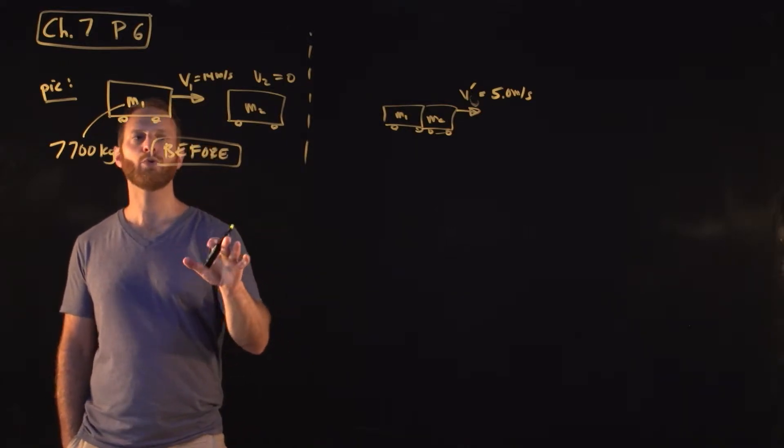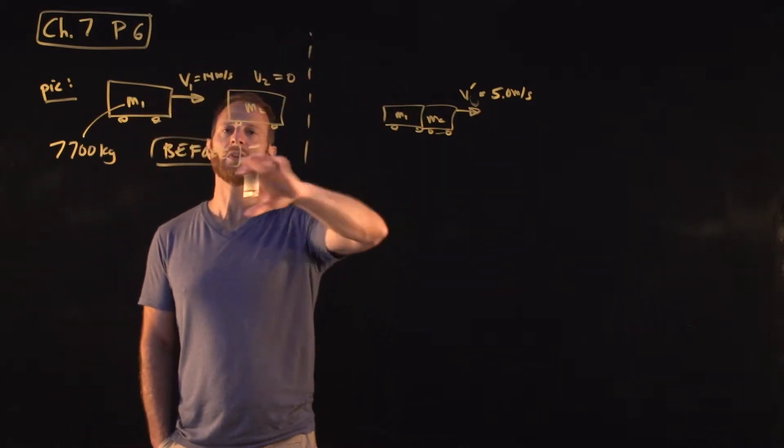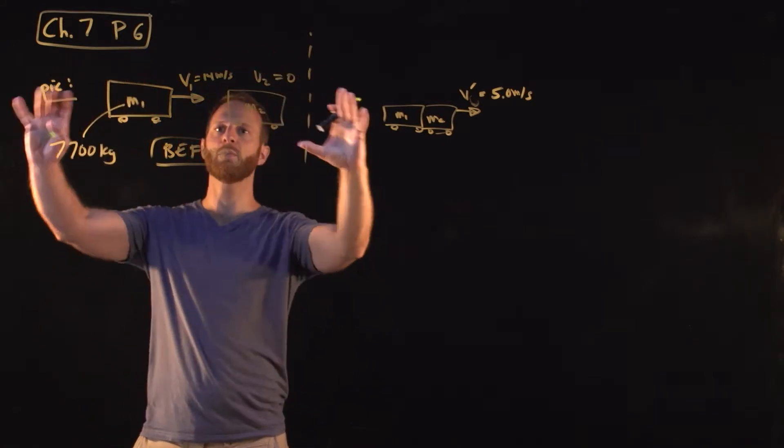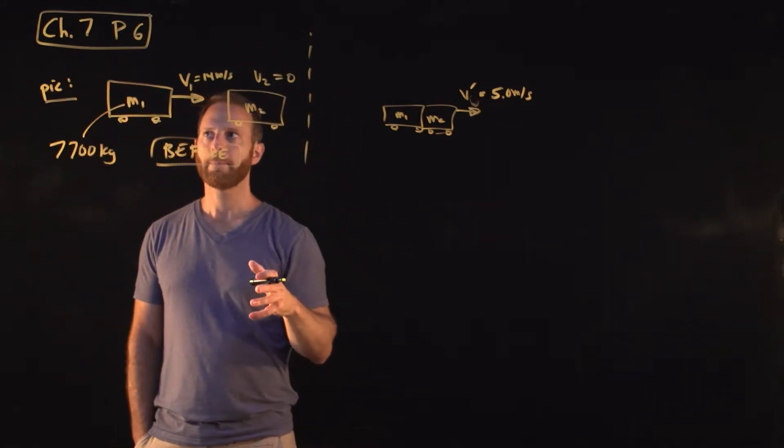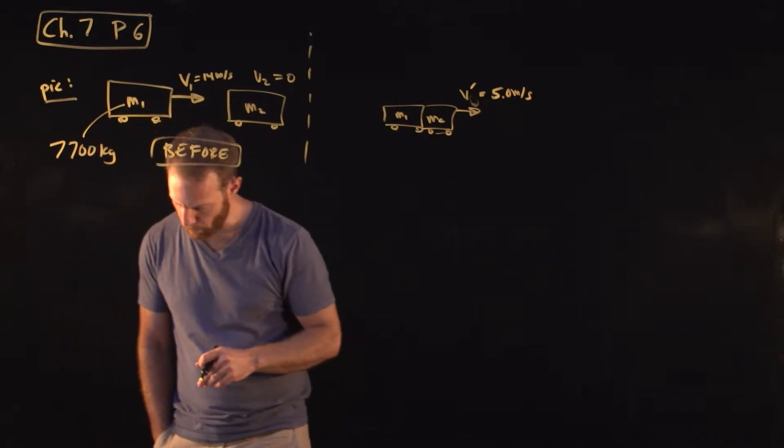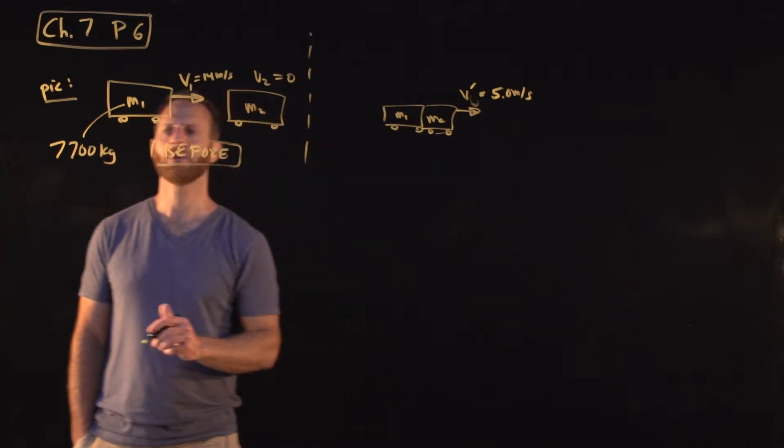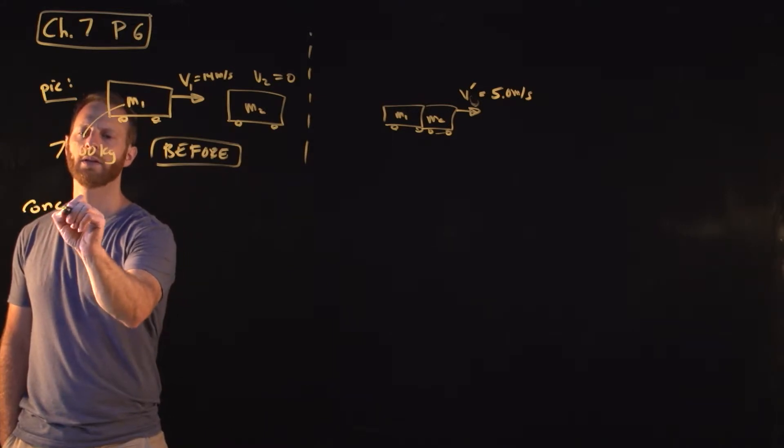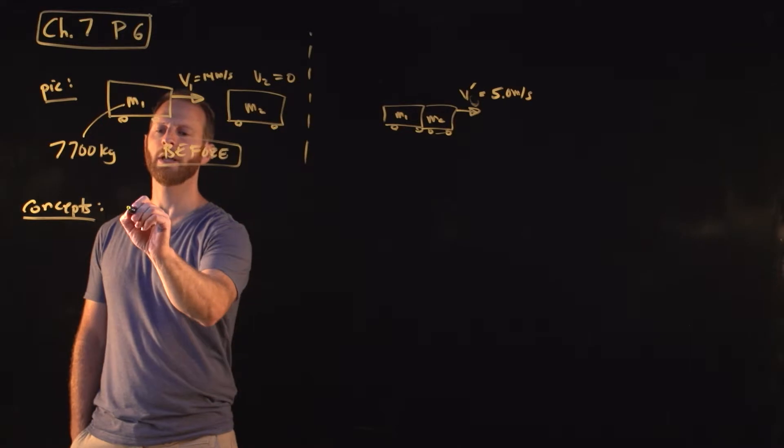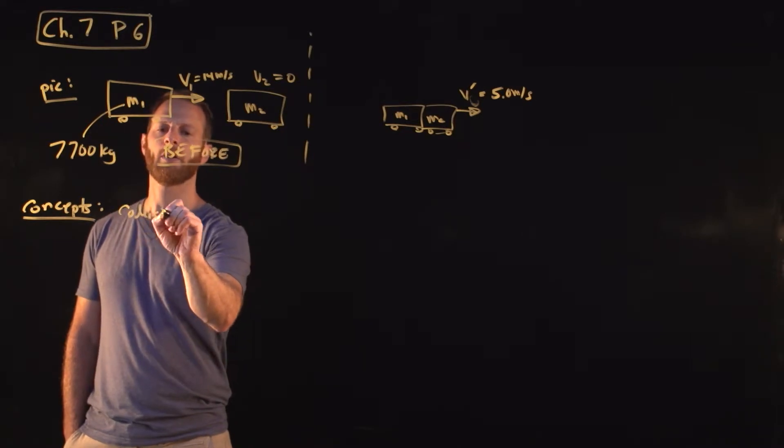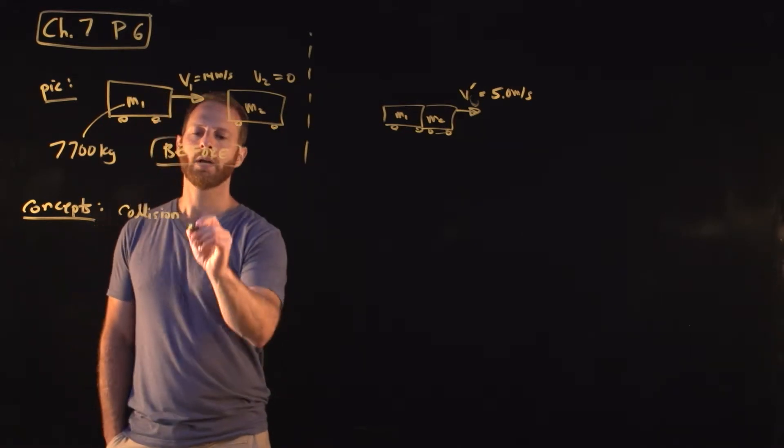We're supposed to assume that there are no significant external forces to our system, which the system consists of the two boxcars, and so we are practicing using the conservation of momentum. All right, so conceptually. Concepts we have here. Concepts. All right, this is a collision, and in nearly all of the collision problems we'll do, collisions